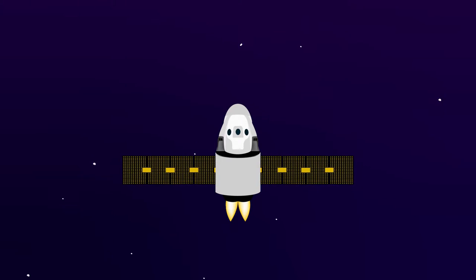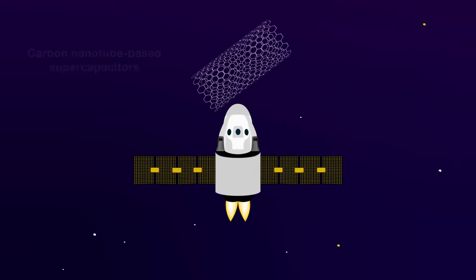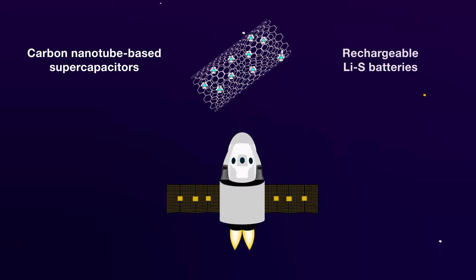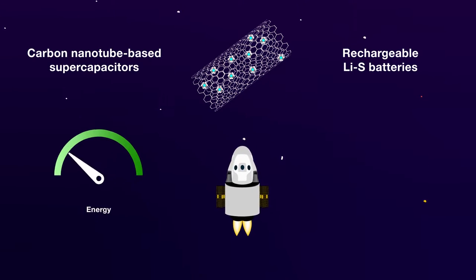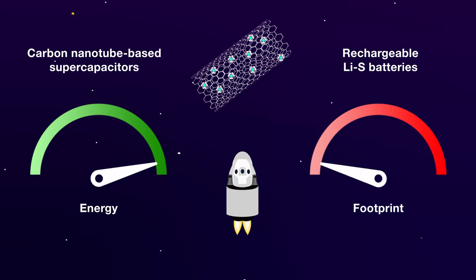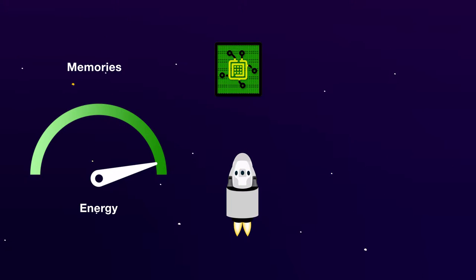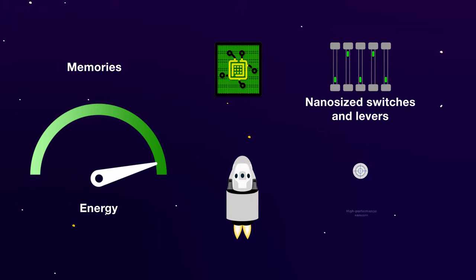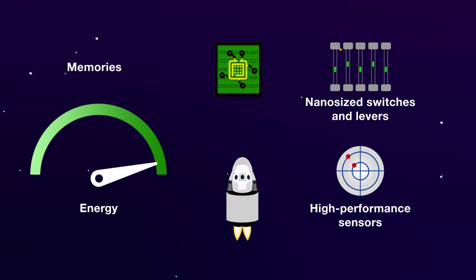With respect to energy storage, work on carbon nanotube-based supercapacitors and rechargeable lithium-sulfur batteries is expected to yield systems with dramatically improved energy density, while reducing the footprint of the electronics they power. Similarly, memory storage devices based on the mechanical movement of nanosized switches and levers and high-performance sensors based on nanomaterials are expected to provide electronics that are immune to radiation and consume low levels of power.